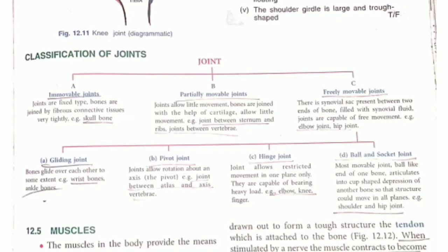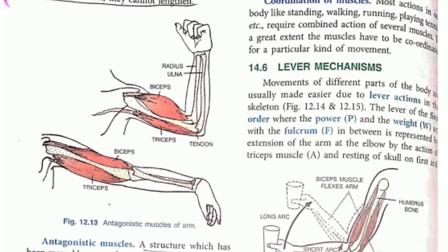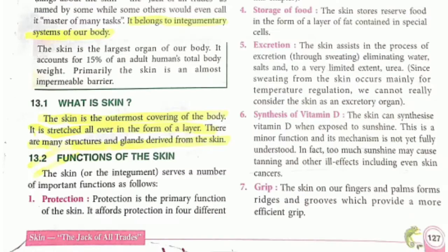For muscles, only learn what is the tricep, what is the bicep, the kinds of muscles, and lever mechanics — that's it. The skeleton part is more important than muscles or other parts. Next up is skin: learn any five functions of the skin.